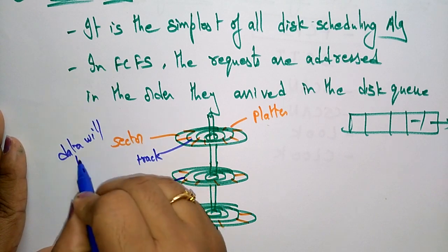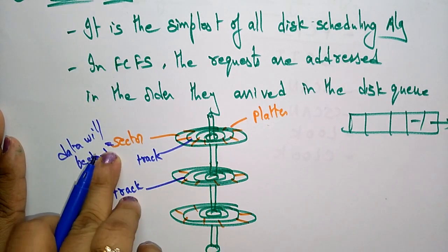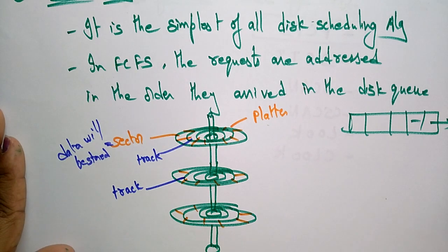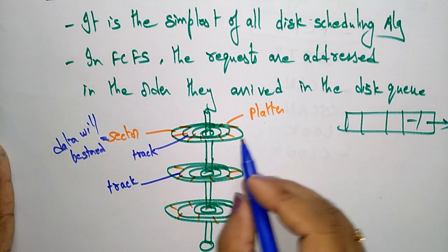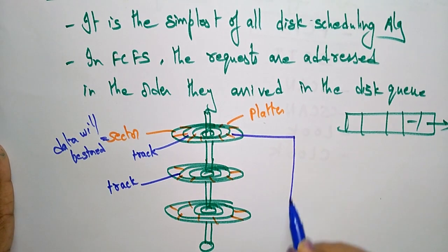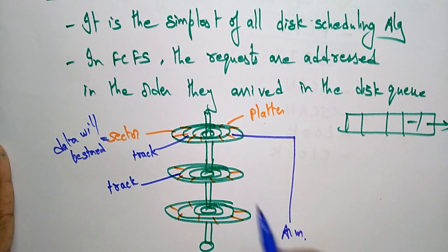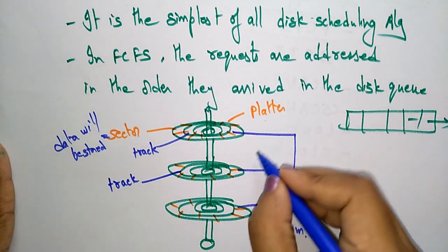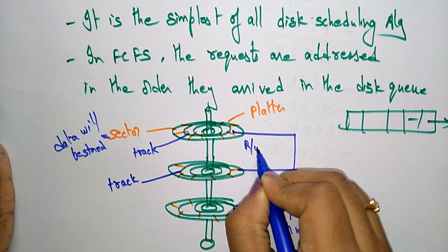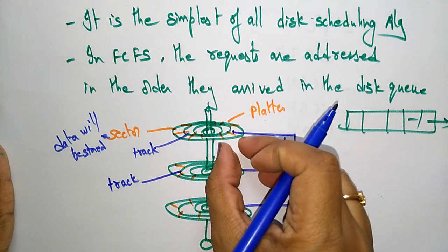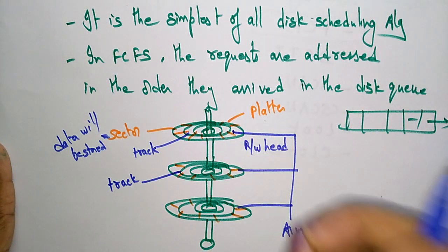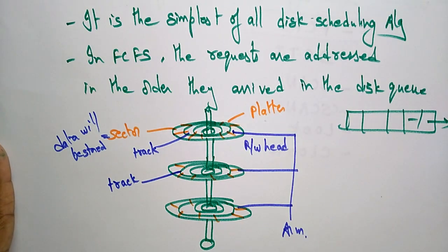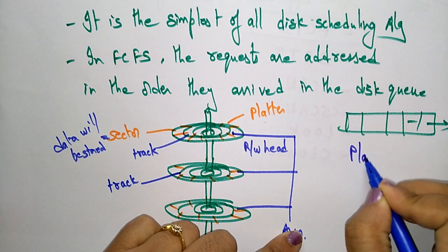The arm is placed at some position on the platter. To read and write data, we use what is called the read/write head. The arm carries the read/write head. To read or write data, the arm must be placed on the correct platter, and it first reaches the target platter.